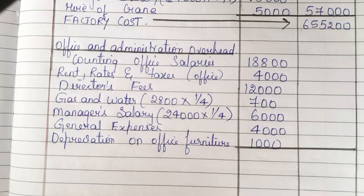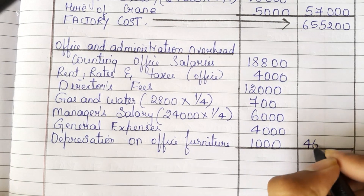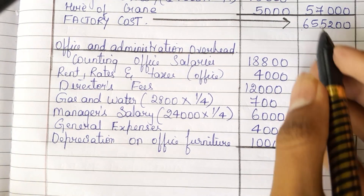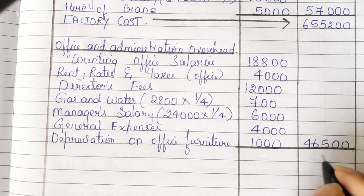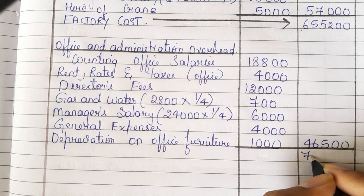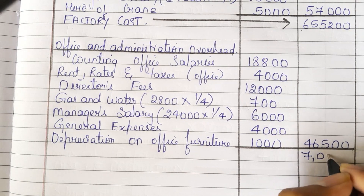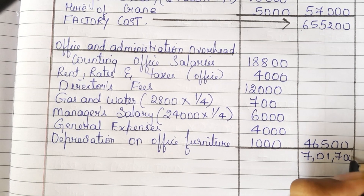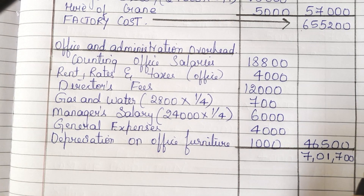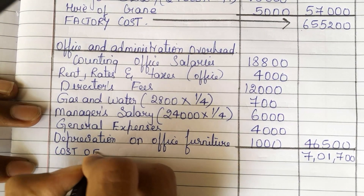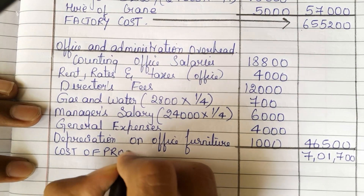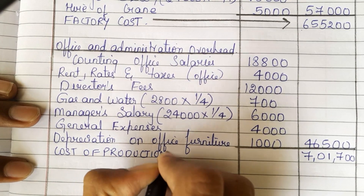Adding all these items, we get 46,500. Adding 6,55,200 and 46,500, we get 7,01,700. This is called cost of production.